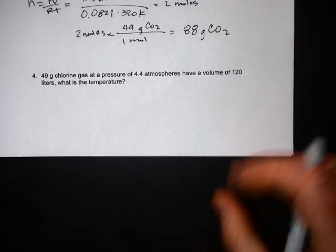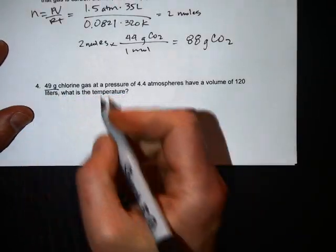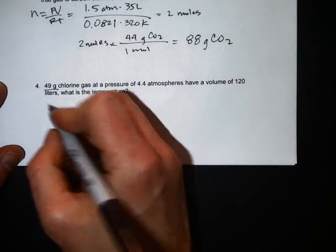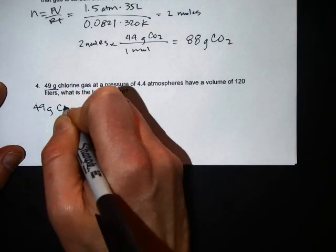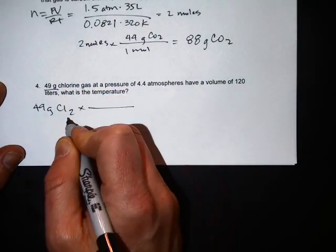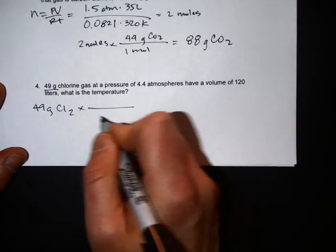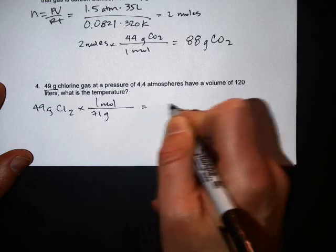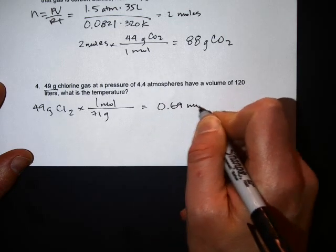For this chlorine one here at the bottom, we've got grams we're going to convert to moles, so you're going to know you're using the ideal gas law. So solving for that, you take your 40 grams. The trick is that chlorine is a sneaky seven, so you got to have two there, it's diatomic, 71 grams per mole. That equals about 0.69 moles.